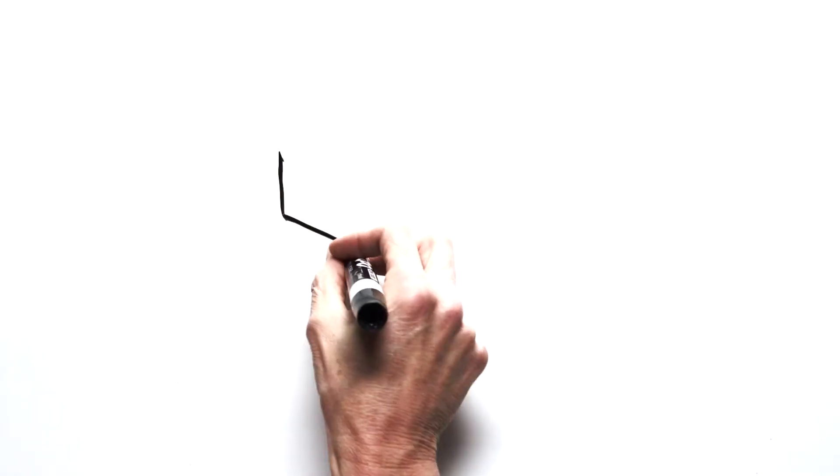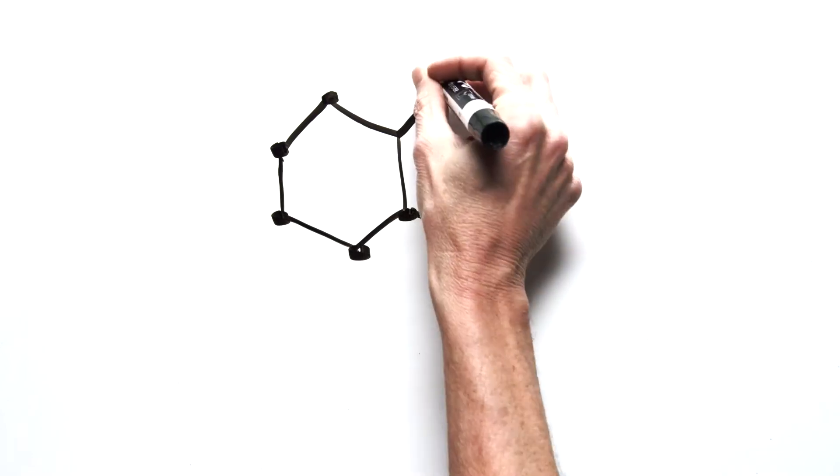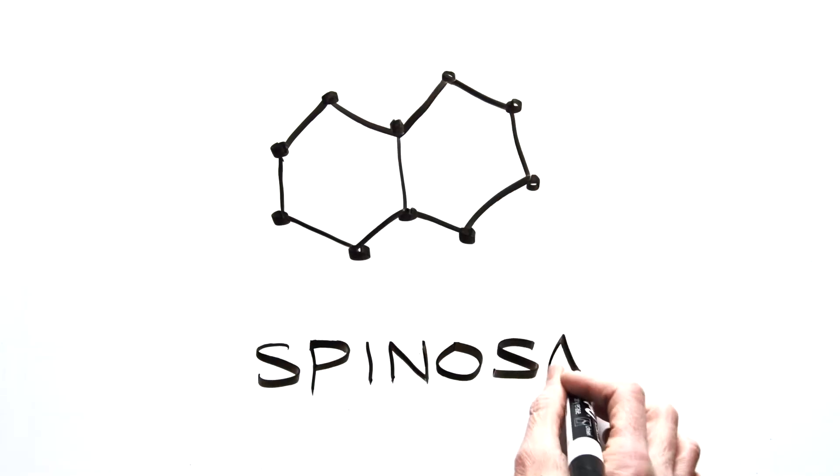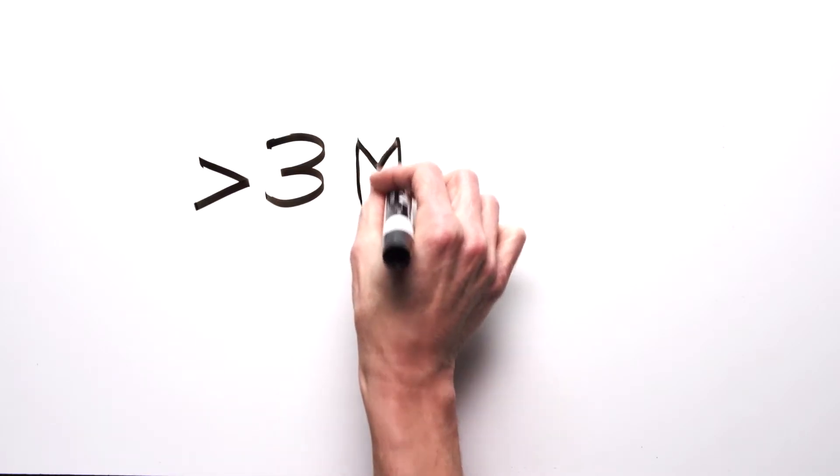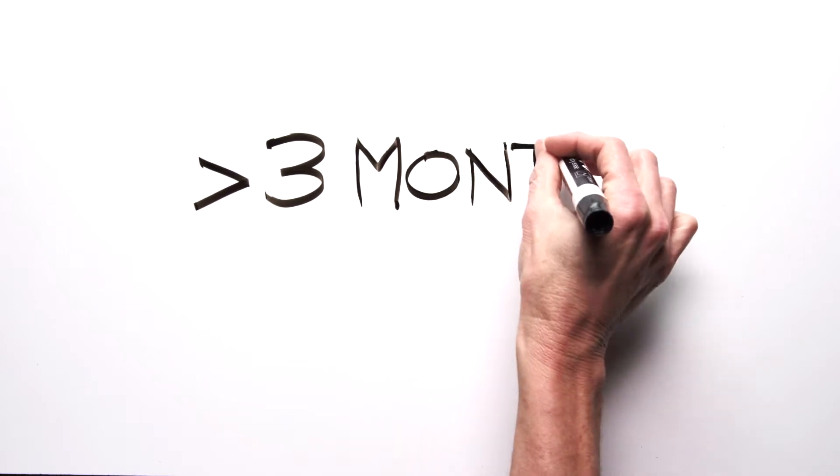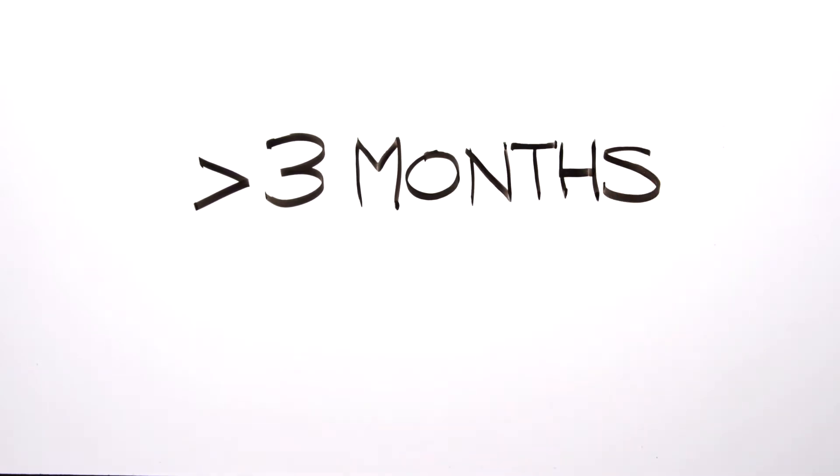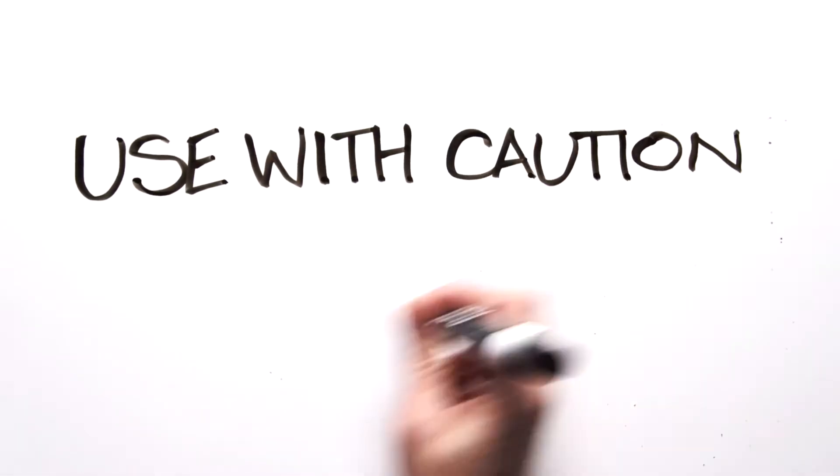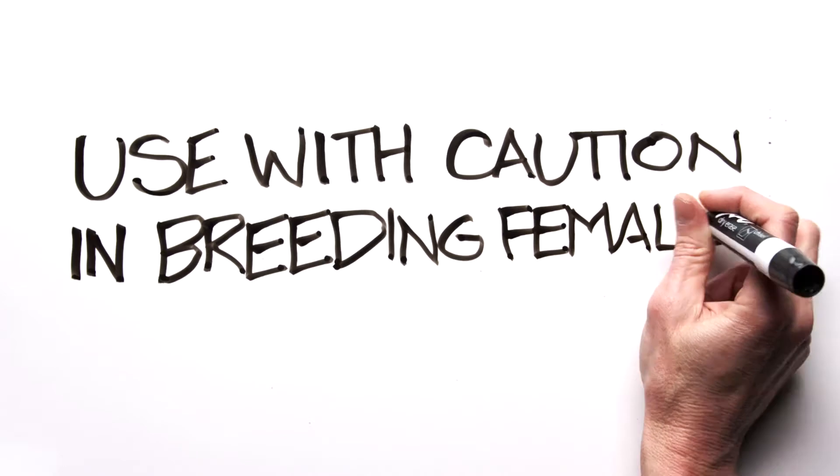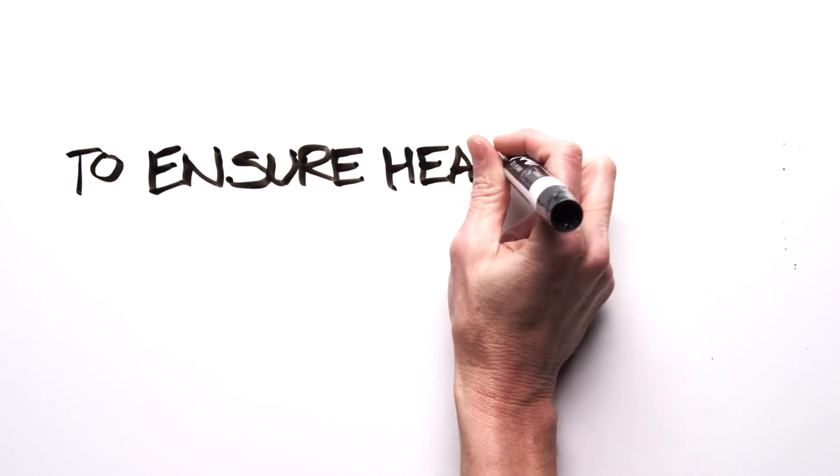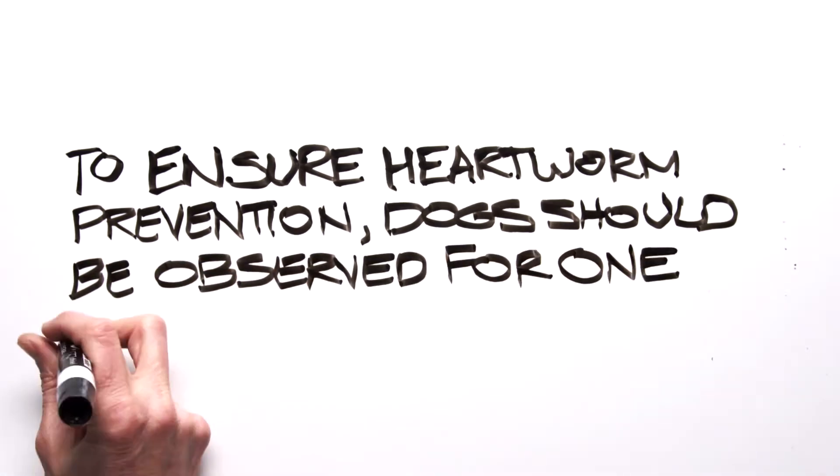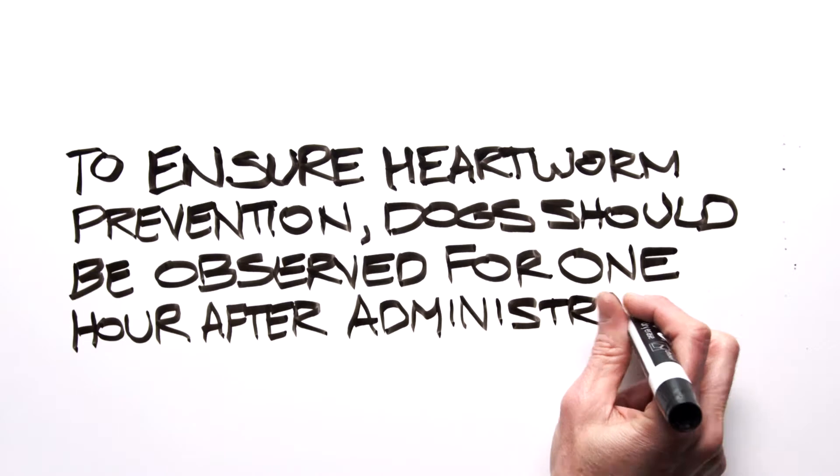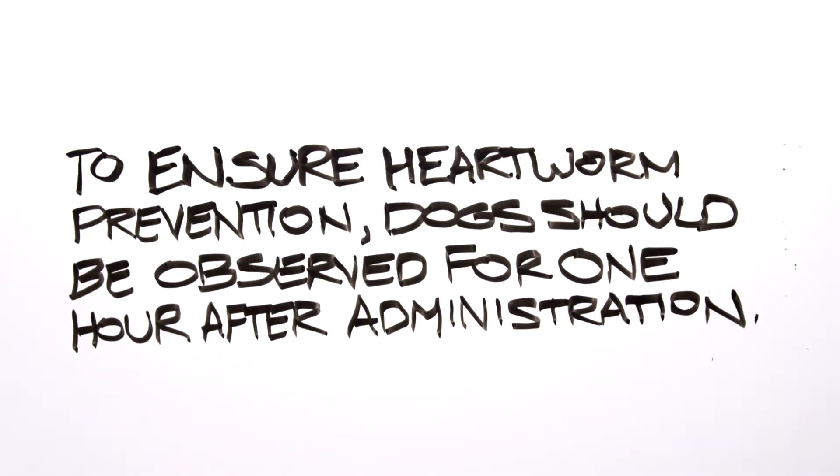Important safety information. Serious adverse reactions have been reported following concomitant extra-label use of ivermectin with spinosad alone, one of the components of Trifexis. Treatment with fewer than three monthly doses after the last exposure to mosquitoes may not provide complete heartworm prevention. Prior to administration of Trifexis, dogs should be tested for existing heartworm infection. Use with caution in breeding females. The safe use of Trifexis in breeding males has not been evaluated. Use with caution in dogs with pre-existing epilepsy. The most common adverse reactions reported are vomiting, lethargy, pruritus, anorexia, and diarrhea. To ensure heartworm prevention, dogs should be observed for one hour after administration. If vomiting occurs within one hour, re-dose. Puppies less than 14 weeks of age may experience a higher rate of vomiting.